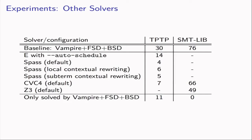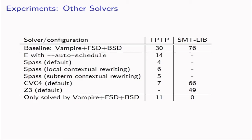We then checked how other solvers perform on these newly solved problems. Taking the 30 from TPTP and 76 from SMT-LIB that Vampire with FSD and BSD solved over the regular portfolio mode: in TPTP, 11 problems remain that were only solved by Vampire with FSD and BSD. In SMT-LIB, the combination of CVC4 and Z3 could solve all 76, but neither could solve all 76 by themselves.